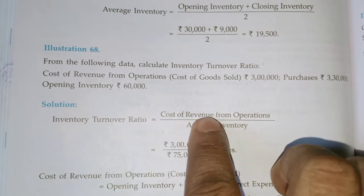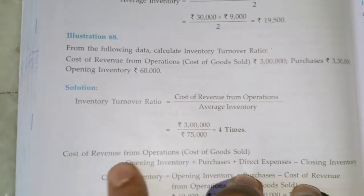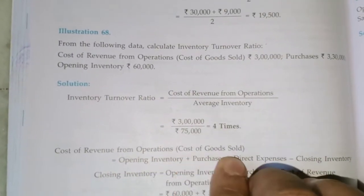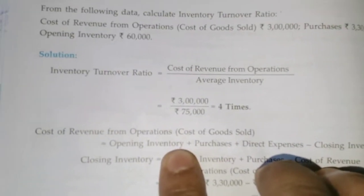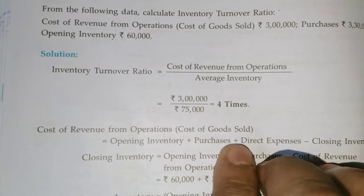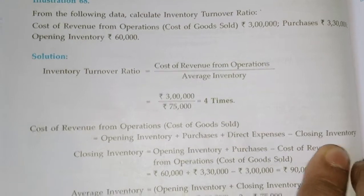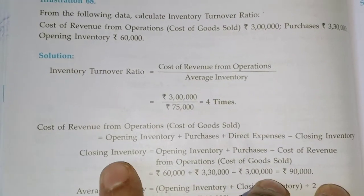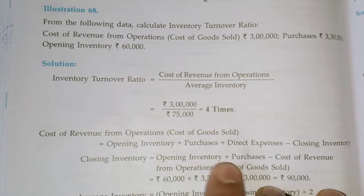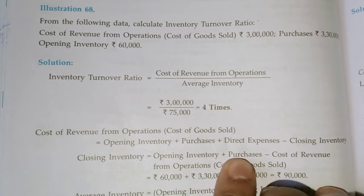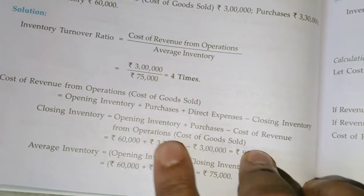Subsequently we have to calculate cost of revenue from operations. The formula is: Cost of Revenue from Operations = Opening Inventory + Purchases + Direct Expenses minus Closing Inventory. Therefore, Closing Inventory = Opening Inventory + Purchases minus Cost of Revenue from Operations.